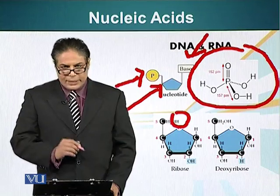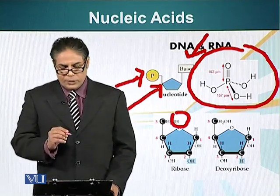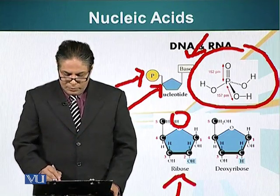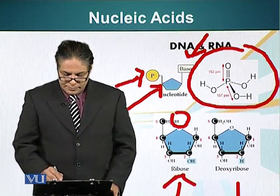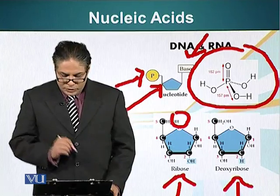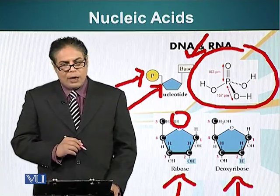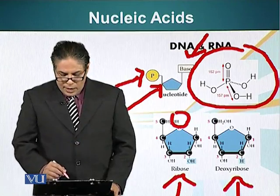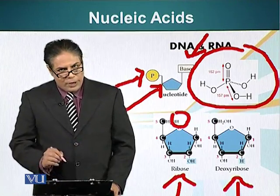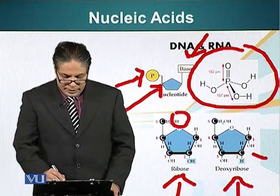Nucleic acids have two types of pentose sugars: ribose and deoxyribose. The difference is the hydroxyl group present on carbon atom number 2. Ribose has that hydroxyl group, whereas deoxyribose does not have this hydroxyl group.